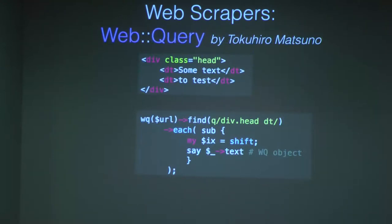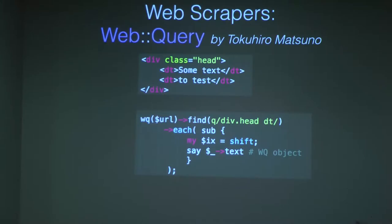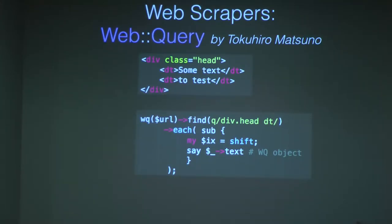With Web::Query, take a simple HTML structure — one div with two DT elements. You run web query on a specific URL, find the div and DT elements, and iterate on each of them. In that sub, you'll have two things: the index starting at zero, and the second — the $_ — is the Web::Query object. You can then feed external or local hashes or whatever you want. It's very useful.